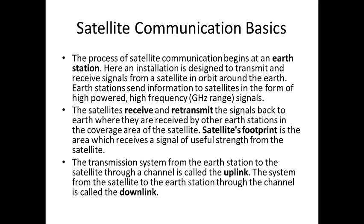Satellite communication basics: the process begins at an earth station designed to transmit and receive signals from a satellite in orbit. The earth station sends information to the satellite in the form of high-powered, high-frequency gigahertz-range signals. The satellite receives and retransmits the signals back to Earth, where they are received by other earth stations in the coverage area. The satellite footprint is the area that receives a signal of useful strength from the satellite. The transmission from earth station to satellite is called the uplink, and from satellite to earth station is called the downlink.